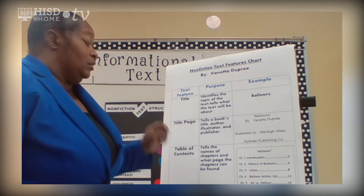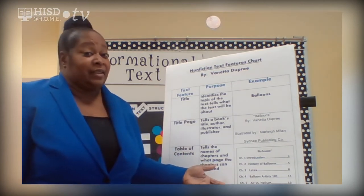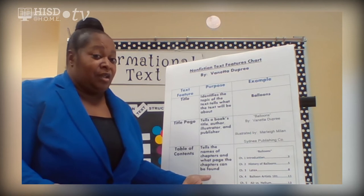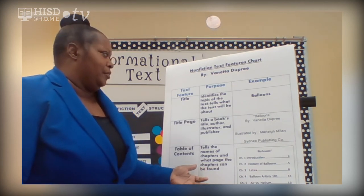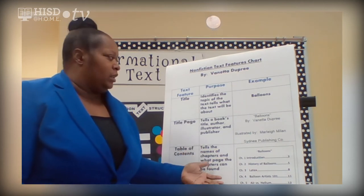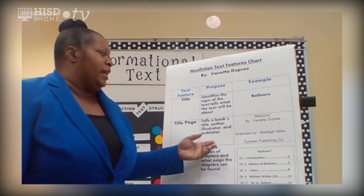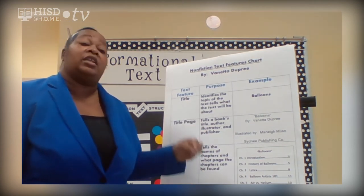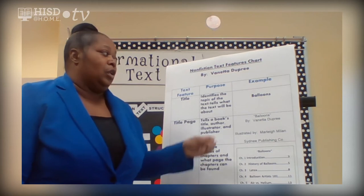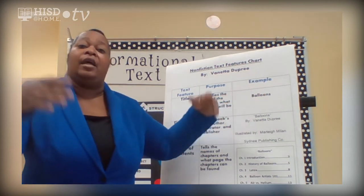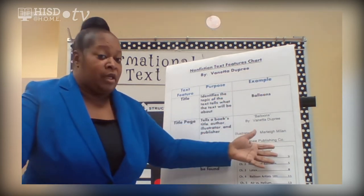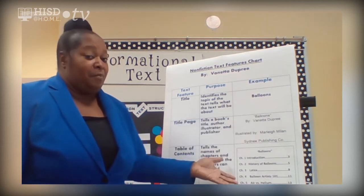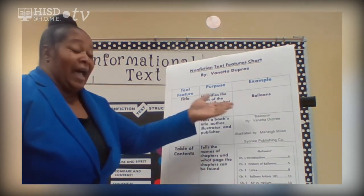Title. Believe it or not, every book has a title. The title is a text feature and we shouldn't ignore it. What is the purpose of the title? It identifies the topic of the text and tells what the text is about. So for our example, if we were to read an informational text about balloons, "Balloons" could be a possible title.